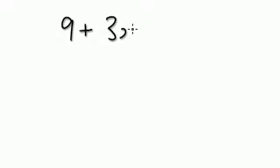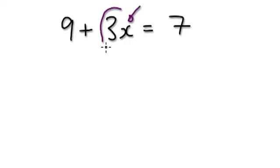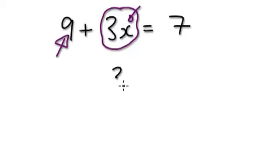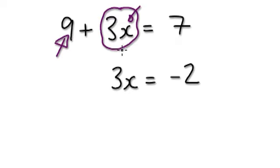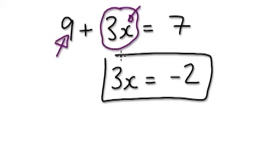If you're given something like 9 plus 3x equals 7, your eye should zoom into the x, and you can see x is stuck in this bubble here — but it's already a positive. So in this case, you would take away 9 from both sides. 7 minus 9 would be minus 2. So you would carry on from here.